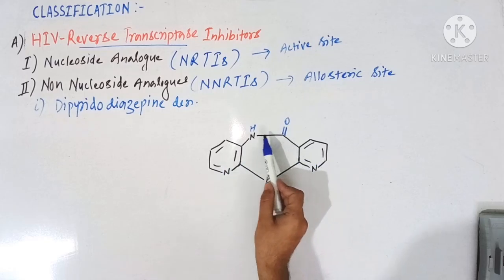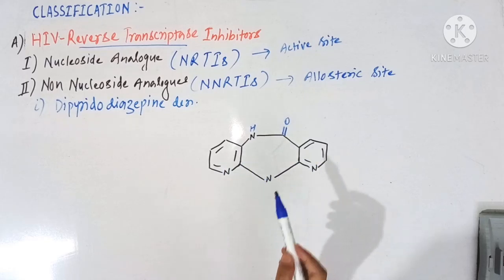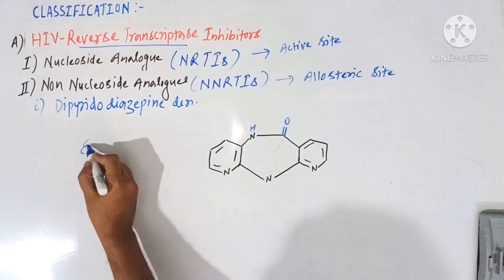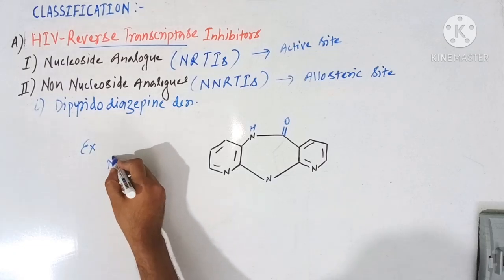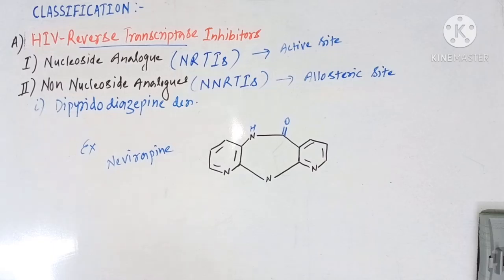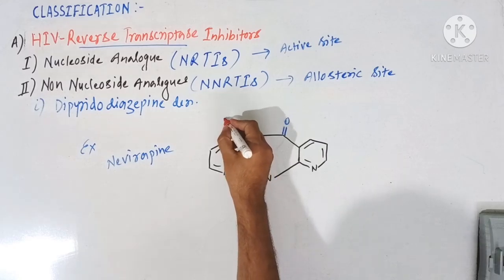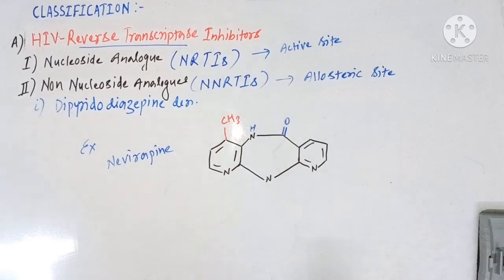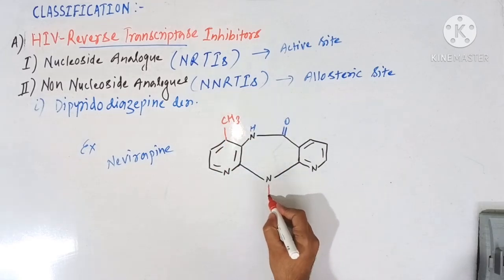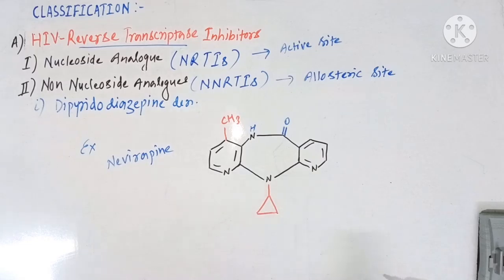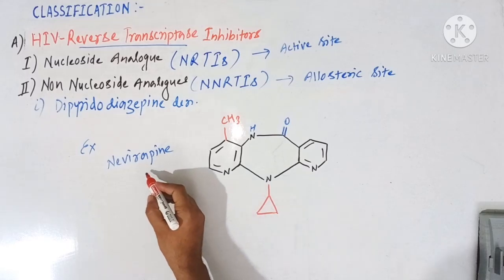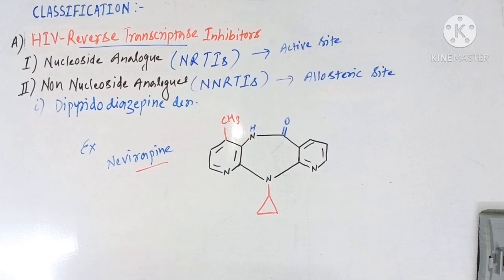So this is the dipyrido-diazepine derivative skeleton. The drug which comes under this class is nevirapine. Nevirapine has a methyl group at this position and a cyclopropyl ring at this nitrogen. So this is actually the structure of nevirapine.